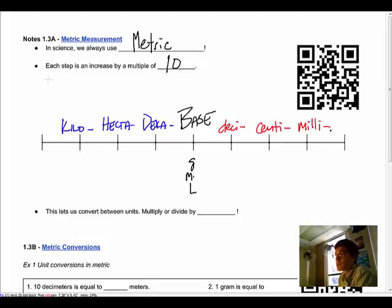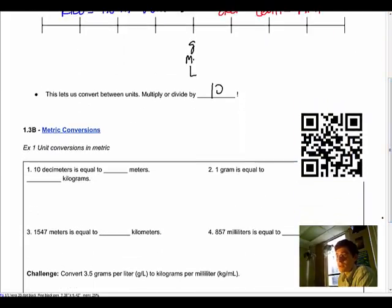The great thing about metric is that we just need to multiply or divide by 10, and when we do that we just swing our decimal. So let's take a look at what I mean. Here's the first example: 10 decimeters is equal to blank number of meters.